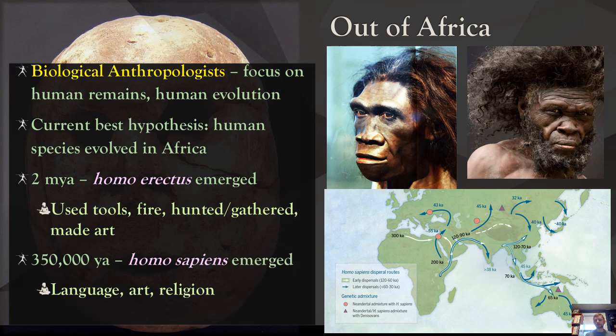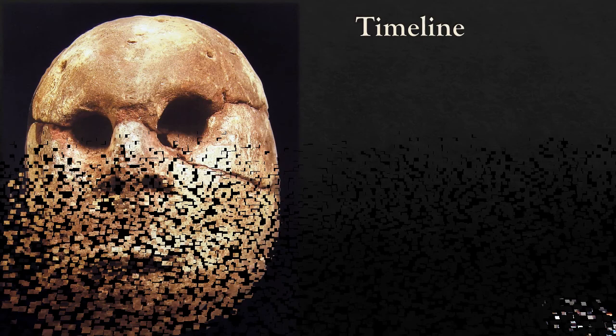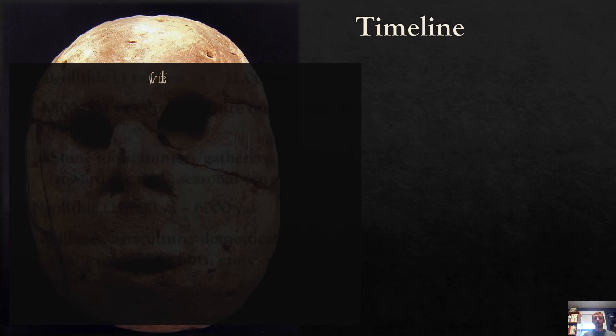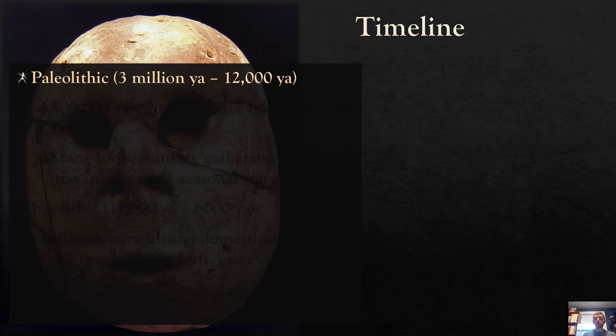Let's now take a look more specifically at what we will be finding in ancient Egypt. Our timeline for ancient Egypt is going to be divided into two periods. The first is called the Paleolithic, which is just a fancy word for old stone — 3 million years ago to 12,000 years ago. I'm using 'YA' for years ago rather than BCE, because the further back you go, the easier it is to say how many years ago something happened rather than giving a BCE date.